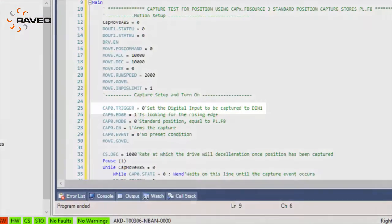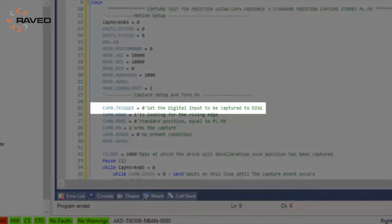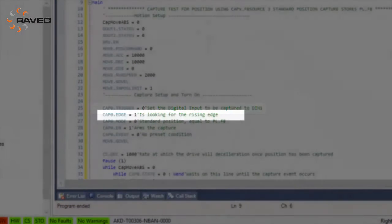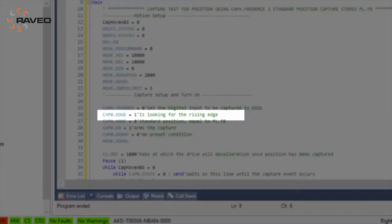CAP0.Trigger equals 0 will set the digital input to 1 to the trigger source. CAP0.Edge equals 1 will trigger on the rising edge or positive transition.